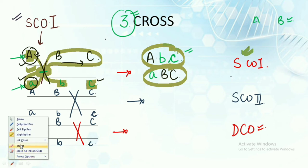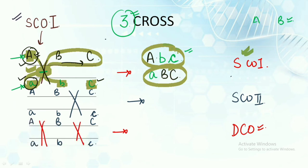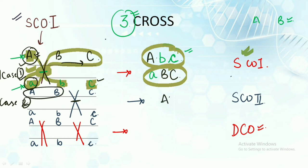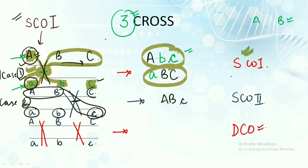For single crossover two — crossing between B and C — chromosome one gives: capital A, capital B, small c. Chromosome two gives: small a, small b, capital C. This is because the crossing occurred after gene B, so only the C position is exchanged. These are the results of single crossover two.